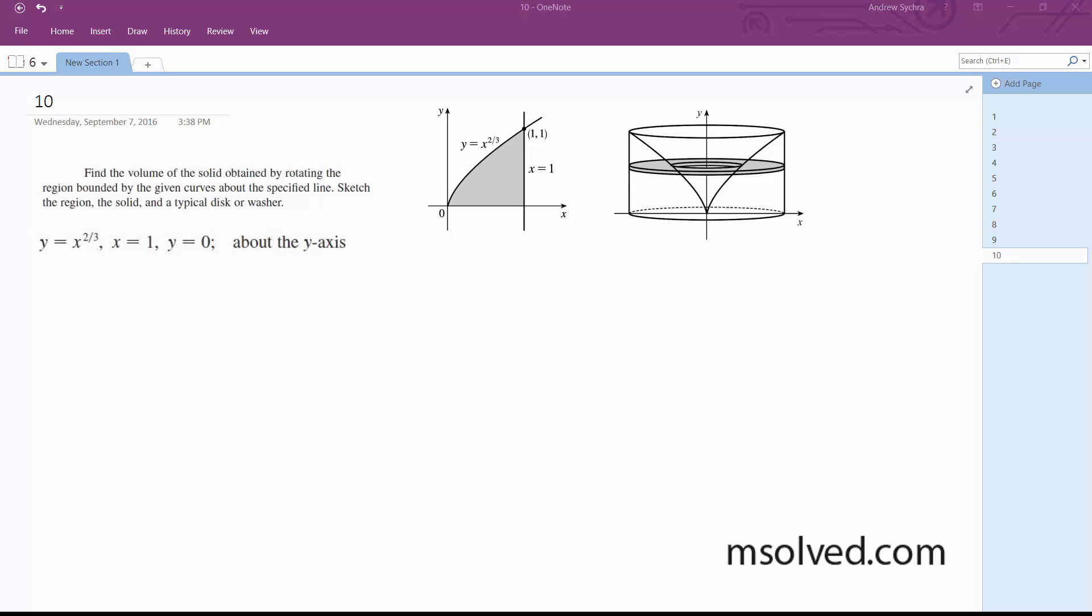All right, so finding the total volume enclosed using disks or washers. The area A(y) is going to be equal to, in this case, outer radius is 1, so pi times 1 squared minus pi times y, which switches around in terms of y with regards to x, so square root of 3/2 y squared.